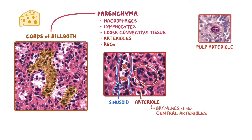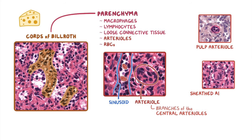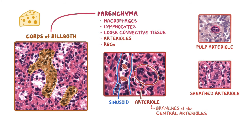Portions of the pulp arterioles are called sheathed arterioles, because they are surrounded by macrophages that help filter the blood. But there are also arterioles that don't have sheaths, and they're considered to be non-filtering arterioles.